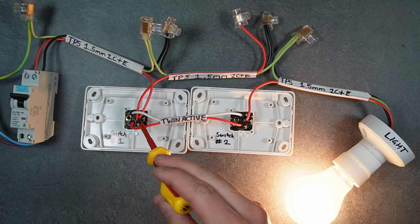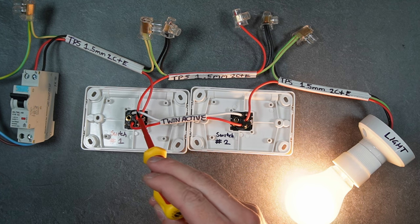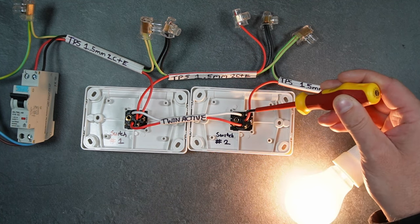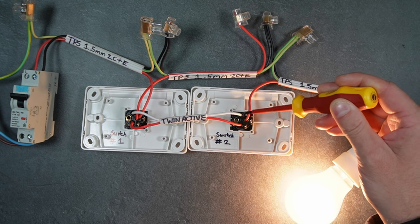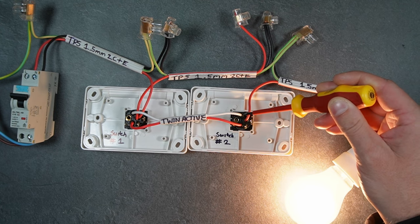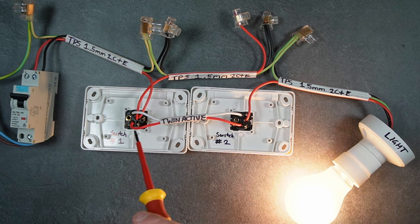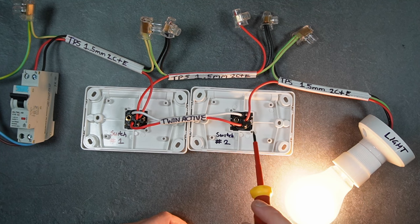It will flow from the common to the white active conductor over to switch number two terminal two, switching between common and number two, and then up to the light. Both switches are in the off position. If I was to turn switch number two on...